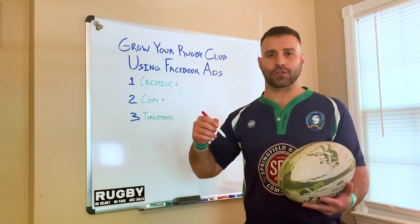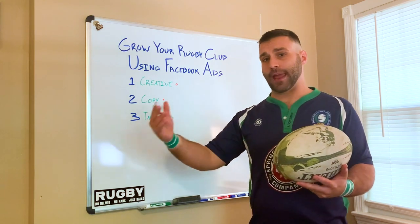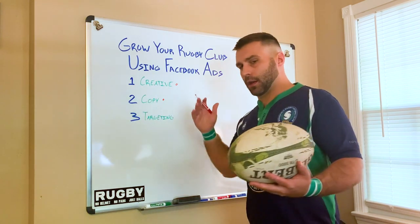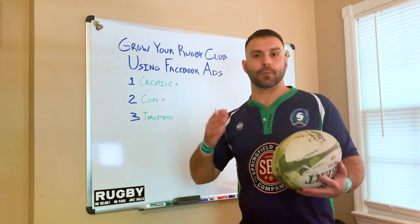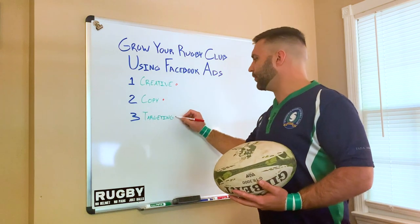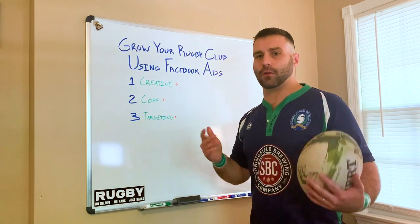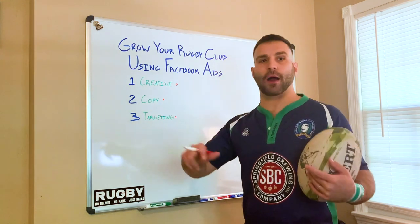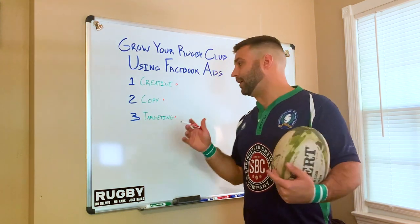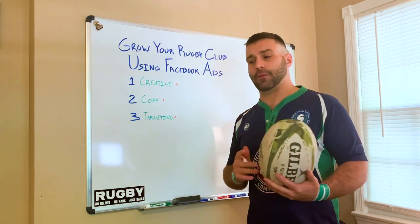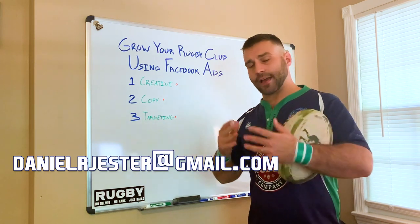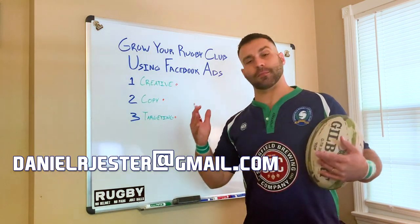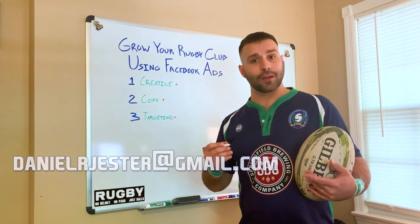The second thing you need is good copy. Understand what your call to action for the ad is — if it's going to ask recruits to message your page, say that. If you've built an event page for spring recruiting, say respond to the event and come. Make it clear and concise and get them excited. Third, you need good targeting. The Facebook backend lets you target 18- to 40-year-olds in a five-mile radius around your city very easily.